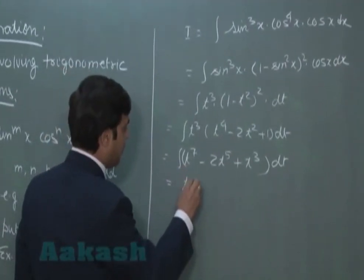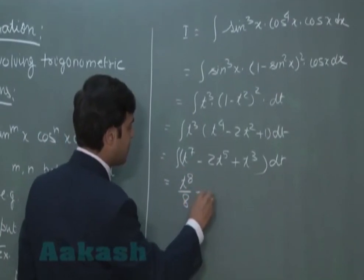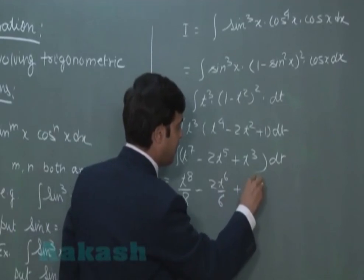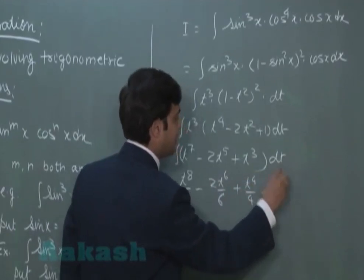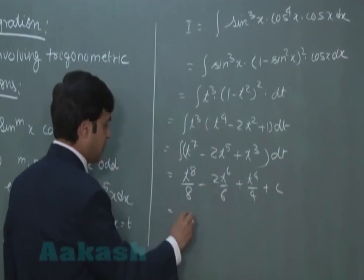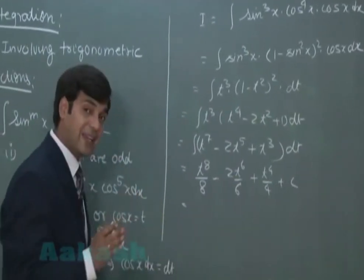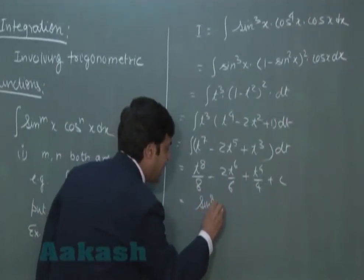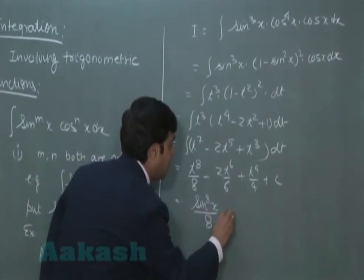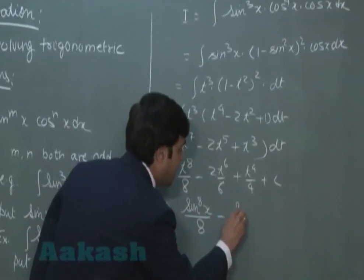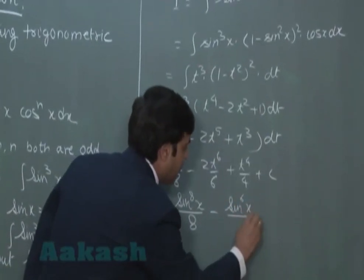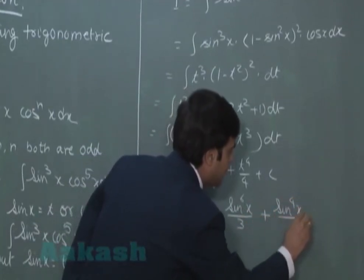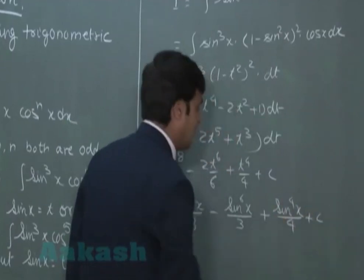we get t⁸/8 - 2t⁶/6 + t⁴/4 + constant. This gives me, my substitution was sin(x) as t. This gives us sin⁸(x)/8 - sin⁶(x)/3 + sin⁴(x)/4 + constant.